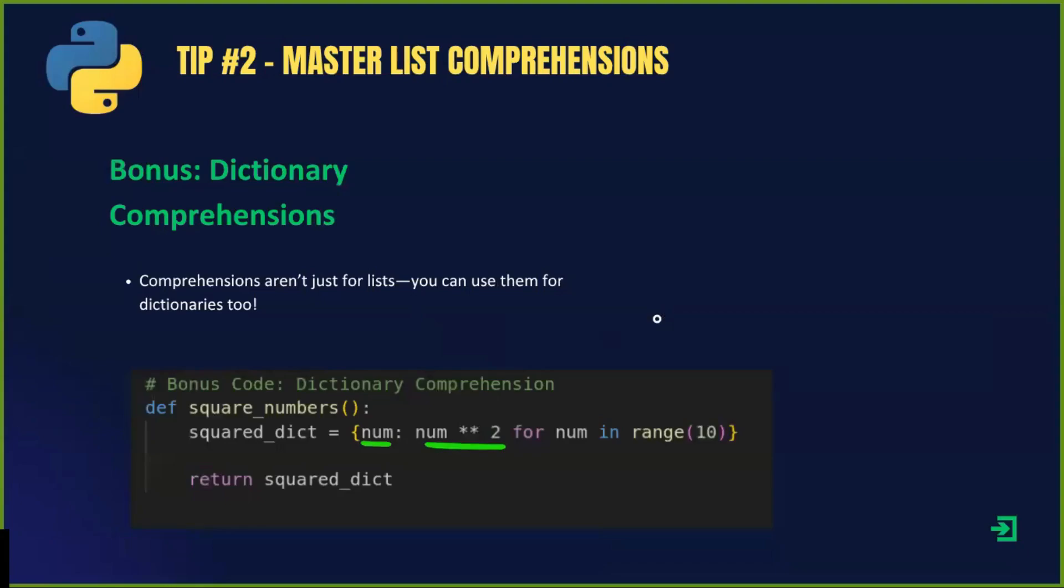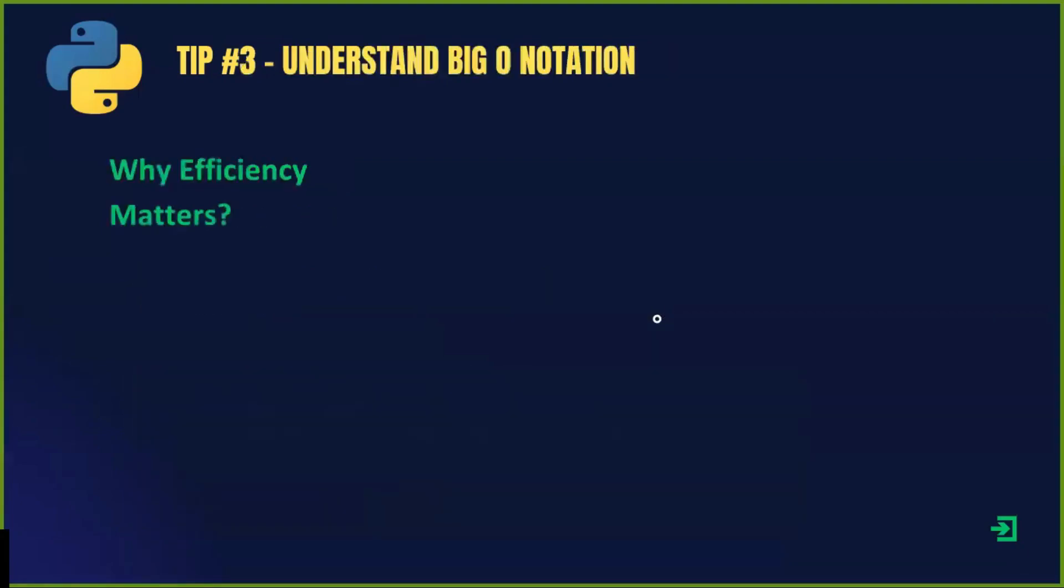Now, let's move on to the third and final tip: writing efficient Python code using Big O notation. When writing Python code, efficiency is key. The way you structure your code affects its performance. Let's say you have a thousand papers to sort. You could do it manually, one by one, or you could use a sorting machine that completes it in seconds.